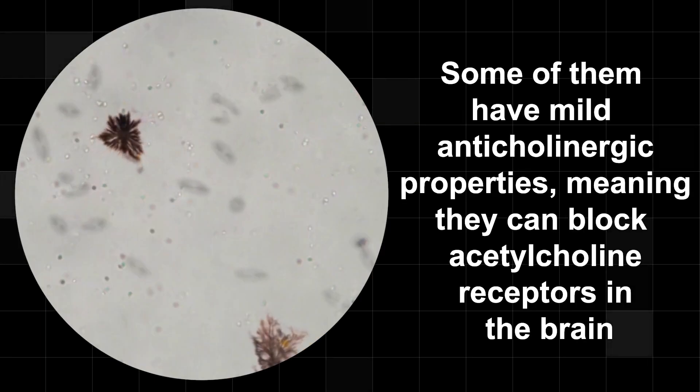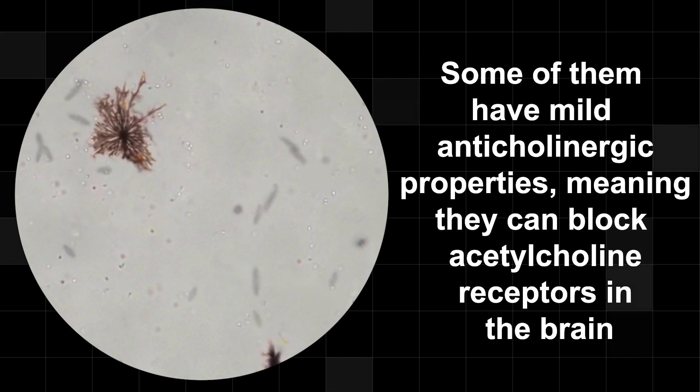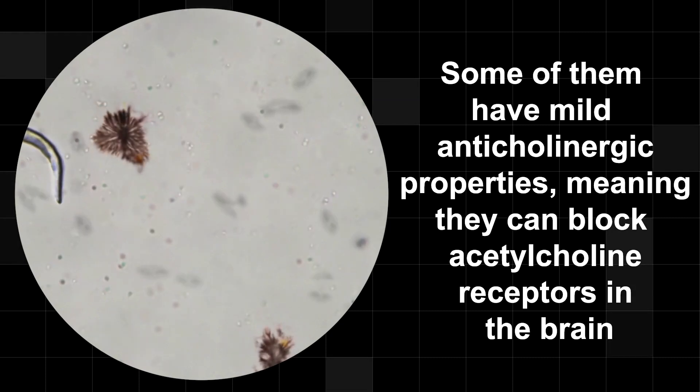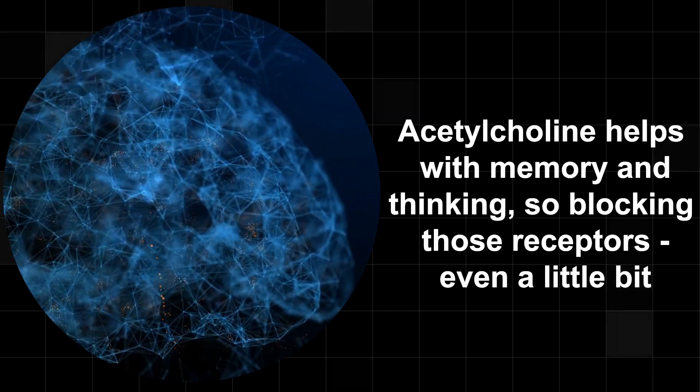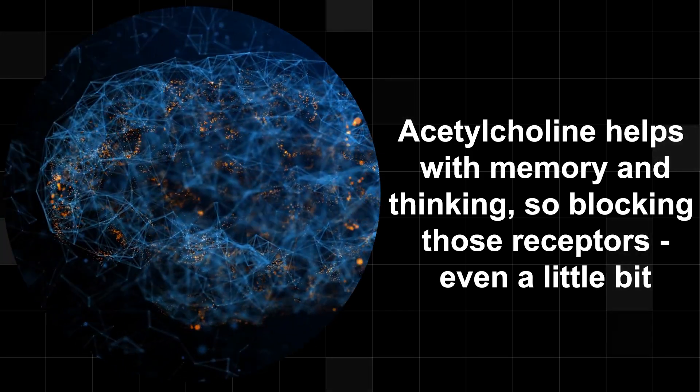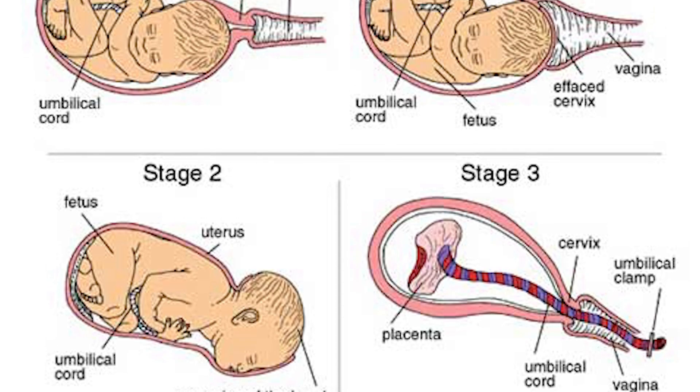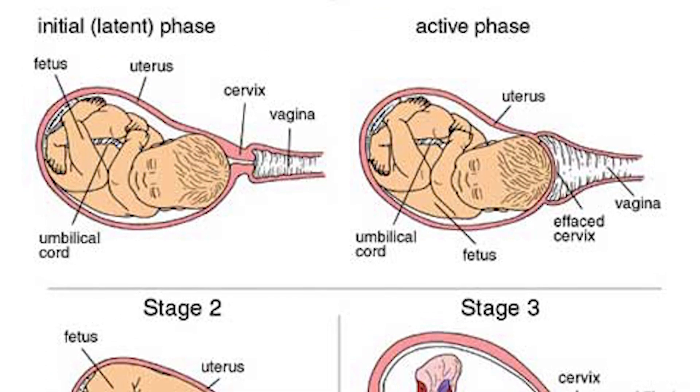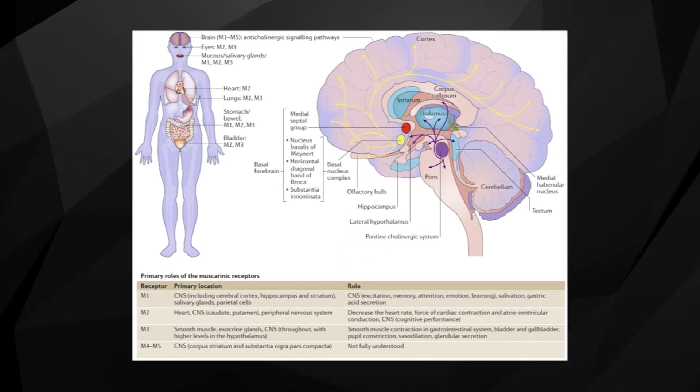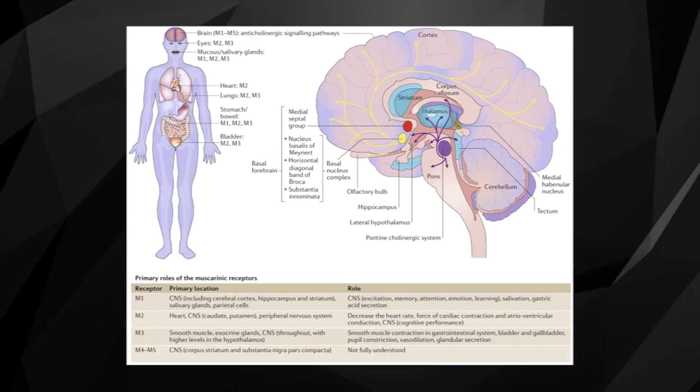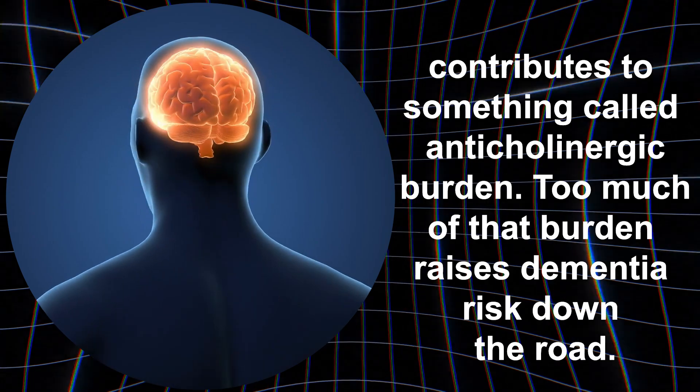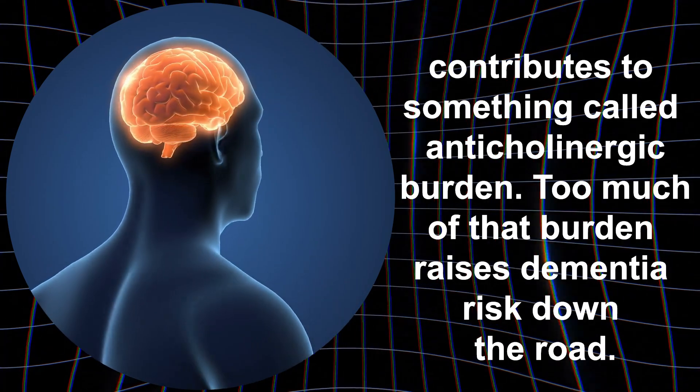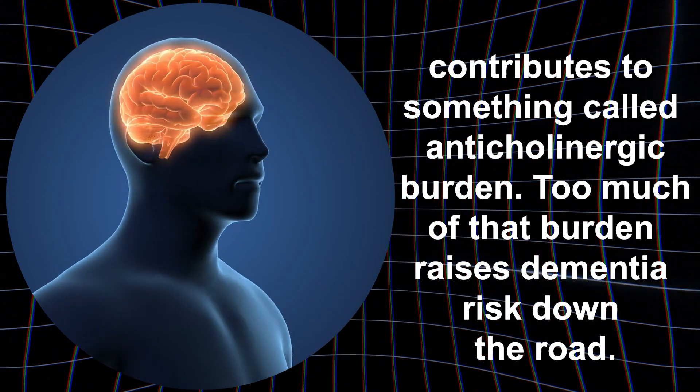Some of them have mild anticholinergic properties, meaning they can block acetylcholine receptors in the brain. Acetylcholine helps with memory and thinking, so blocking those receptors, even a little bit, isn't great, especially with prolonged use. Using anticholinergic antihistamines long-term, particularly with other anticholinergic meds, contributes to something called anticholinergic burden. Too much of that burden raises dementia risk down the road.